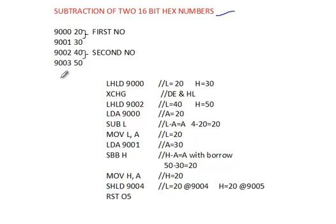For example, I take addresses 9000, 9001, 9002, and 9003 — these are the memory locations. In these locations I am taking inputs 20 and 30 as the first number, because 20 is one 8-bit number and 30 is one 8-bit number; together they form one 16-bit number. Similarly, I am taking 40 and 50 as the second 16-bit number.